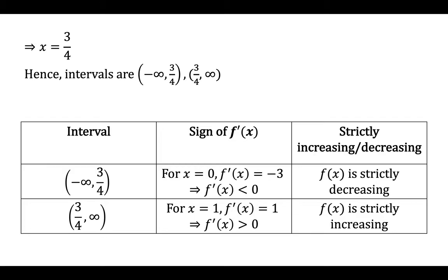We make a table to check strictly increasing or decreasing function with columns: interval, sign of f dash x, and strictly increasing or decreasing. For the first interval minus infinity to 3 by 4, we put x equal to 0 and find f dash x is negative, so f of x is strictly decreasing. For the second interval 3 by 4 to infinity, f dash x is greater than 0, so f of x is strictly increasing.